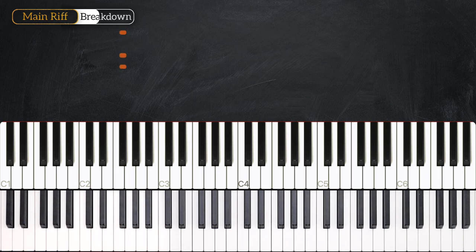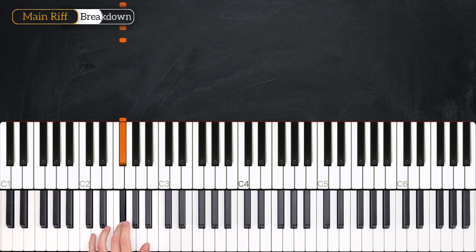To finish off that bar we have four E and a. So that's on beat four, and then on the second 16th note of beat four, and on the fourth 16th note. Let's take a look at the whole bar all together. One E and a, two E and a, three E and a, four E and a.